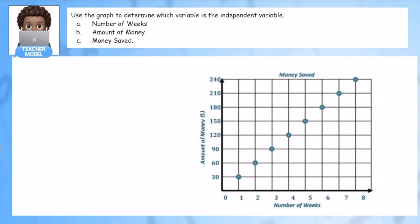Use the graph to determine which variable is the independent variable. So I'm thinking about independent, I know this would be my input when I think of my equation. So what is this whole table about? It's about how much money we save. And what are the two variables? The number of weeks and the amount of money. So those are my variables.